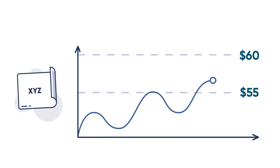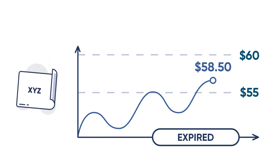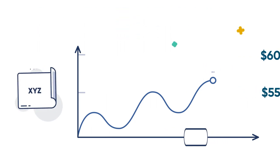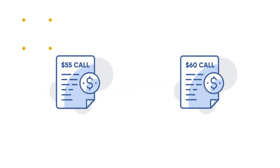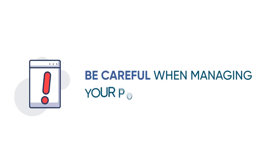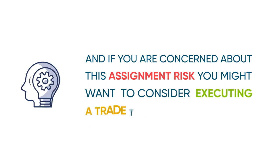For every penny the stock moves above $55, the 55 call has value while the 60 call expires worthless. If the stock remains below $60 at expiration — for example, if XYZ finishes at $58.50 — then the 55 call is worth $3.50, the 60 call is worthless, and the net value of the spread is $3.50, netting you a profit of $1.50 on an investment of $2. Remember, if you choose to exercise the $55 call and are not assigned on the $60 call, you will likely end up with a long stock position, which has a very different risk profile than the bull call spread. Be careful when managing your position at expiration, and if you are concerned about assignment risk, consider executing a trade to close your position.